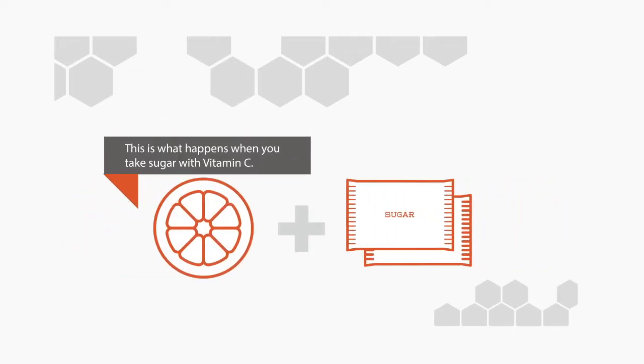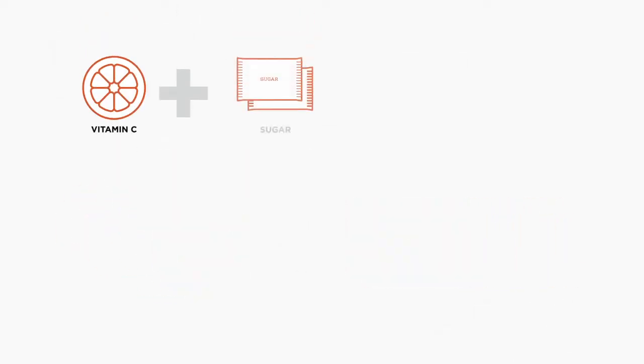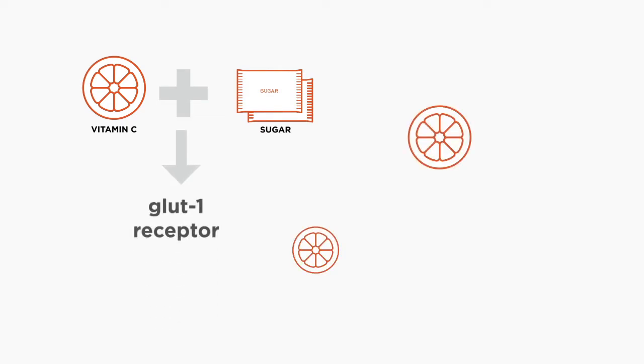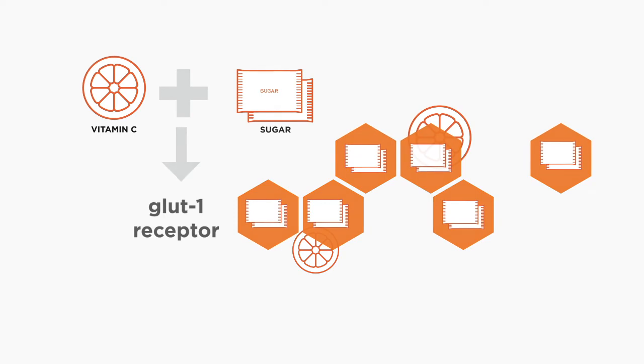This is what happens when you take sugar with vitamin C. Vitamin C and glucose both enter cells through the GLUT1 receptor. The GLUT1 receptor prefers glucose, so it will choose sugar over vitamin C.